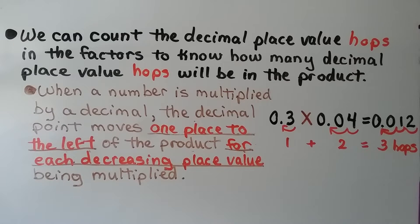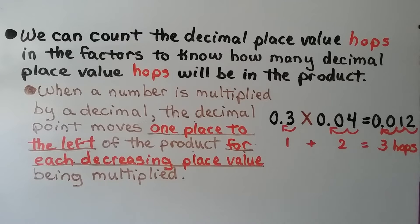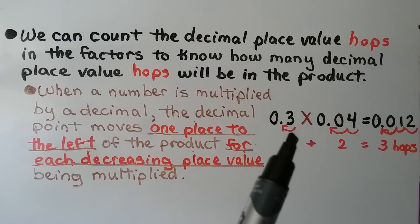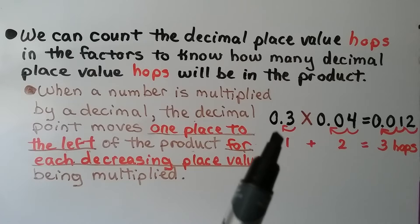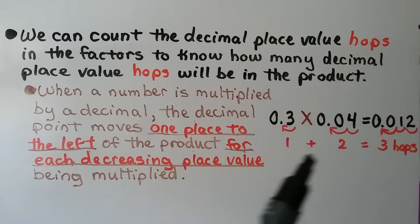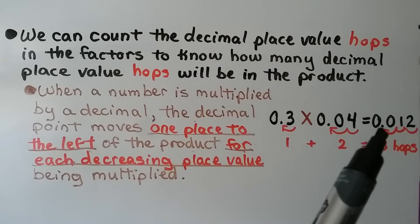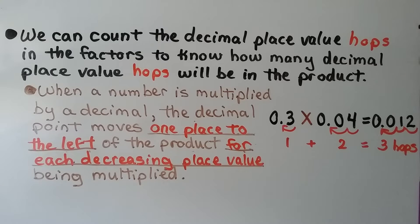We can count the decimal place value hops in the factors to know how many decimal place value hops will be in the product. When a number is multiplied by a decimal, the decimal point moves one place to the left of the product for each decreasing place value being multiplied. So here we have 3 tenths times 4 hundredths. In the factors, we have one decimal hop and two decimal hops — that's three decimal hops total. That's how many will be in the product: 1, 2, 3. We know the decimal needs to go in between this zero and that zero.